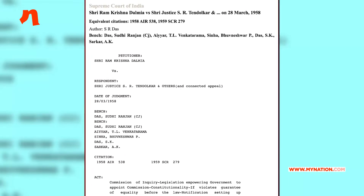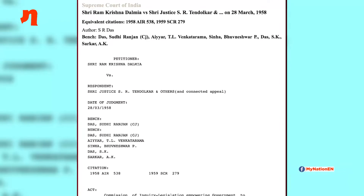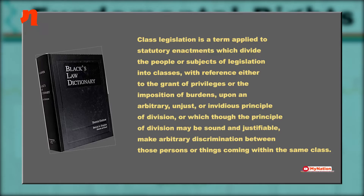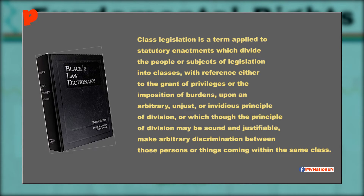Article 14 provides equality before the law; however, there are reasonable restrictions. In the Ramakrishna Dalmia vs. Justice R. Tendulkar case, the Supreme Court reiterated the meaning of Article 14: it permits classification so long as it is reasonable, but forbids class legislation. Black's Law Dictionary says class legislation is a term applied to statutory enactments which divide the people or subject of legislation into classes with reference either to the grant of privileges or the imposition of burdens upon an arbitrary, unjust, or invidious principle of division, or which, though the principle of division may be sound and justifiable, makes arbitrary discrimination between those persons or things coming within the same class.